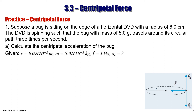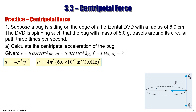The radius is converted to standard units: 6 × 10⁻² meters. The mass is 5 × 10⁻³ kilograms. The frequency is 3 cycles per second, or 3 Hz. To calculate centripetal acceleration when frequency is involved, we use the formula derived in the previous lesson: a = 4π²rf². Plugging in the values, we get a centripetal acceleration of 21.3 m/s².